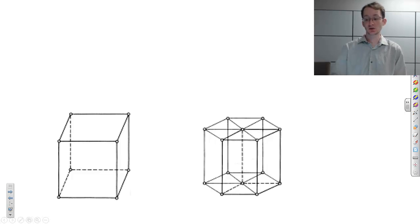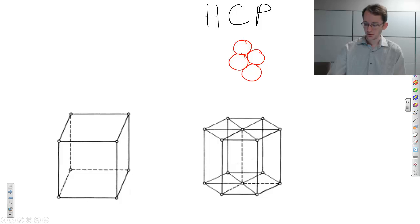For hexagonal close-packed, which we write HCP in shorthand, we will have a certain three-dimensional stacking of these close-packed planes. If I have a close-packed plane that looks like this, I'll call this plane, the starting plane, A.